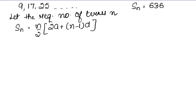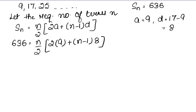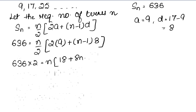A क्या है? D क्या है? SN हमें पता है, 636 है। N निकालना है। A है हमारा 9, और D है 17 minus 9 = 8। 25 minus 17 भी 8 है — checking के लिए। तो 636 = N by 2 into 2 times 9 plus N minus 1 into 8। 2 को multiply करने पर: 636 into 2 equals to N into 18 plus 8N minus 8।